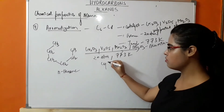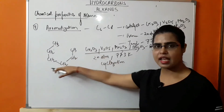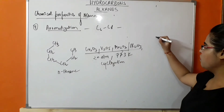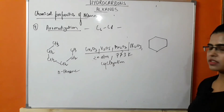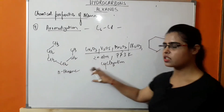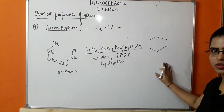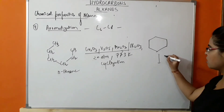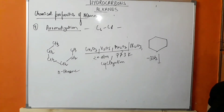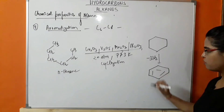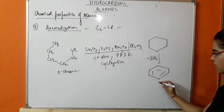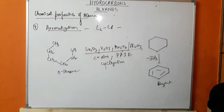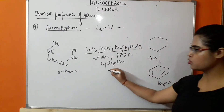In aromatization, n-hexane is taken with catalysts Cr2O3, V2O5, and molybdenum oxide supported by Al2O3 at 20 atmosphere and 773 K. At this temperature, cyclization occurs — the straight chain hexane is converted into cyclic isomer, forming cyclohexane. These are ring-chain isomers. Further, dehydrogenation takes place with removal of three hydrogen molecules, resulting in formation of benzene, an aromatic hydrocarbon.